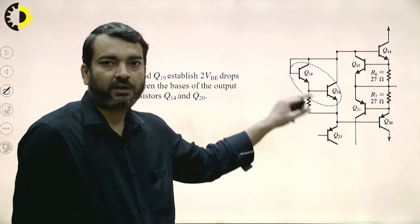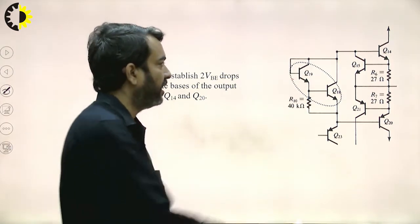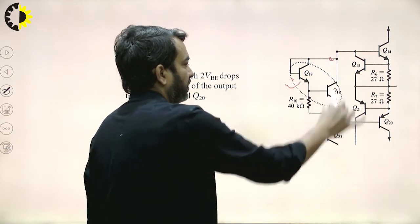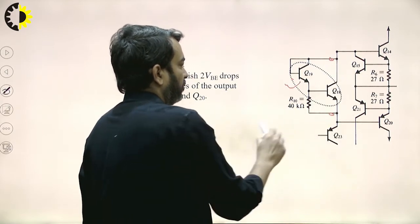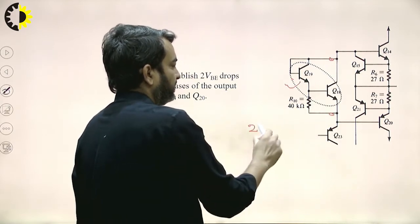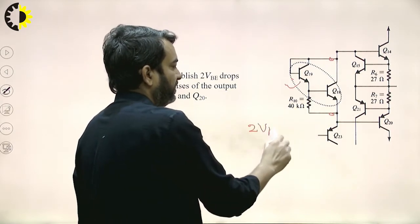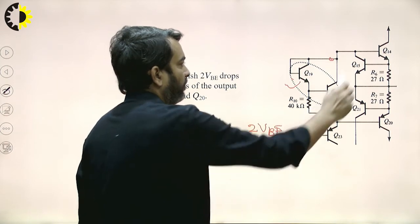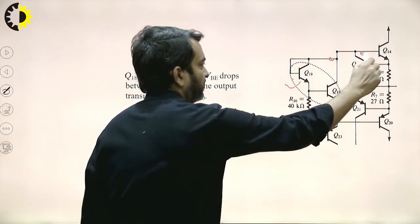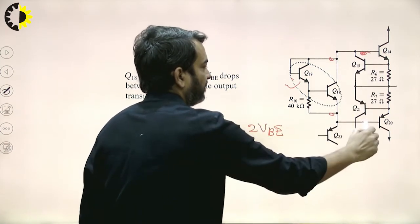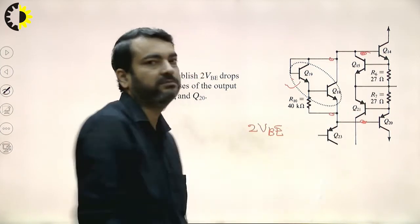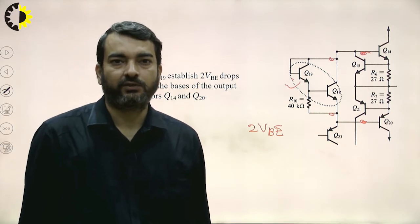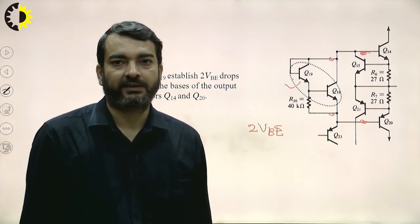The output stage consists of transistors Q14 and Q20, and the role of transistors Q18 and Q19 is to provide biasing to the output stage.